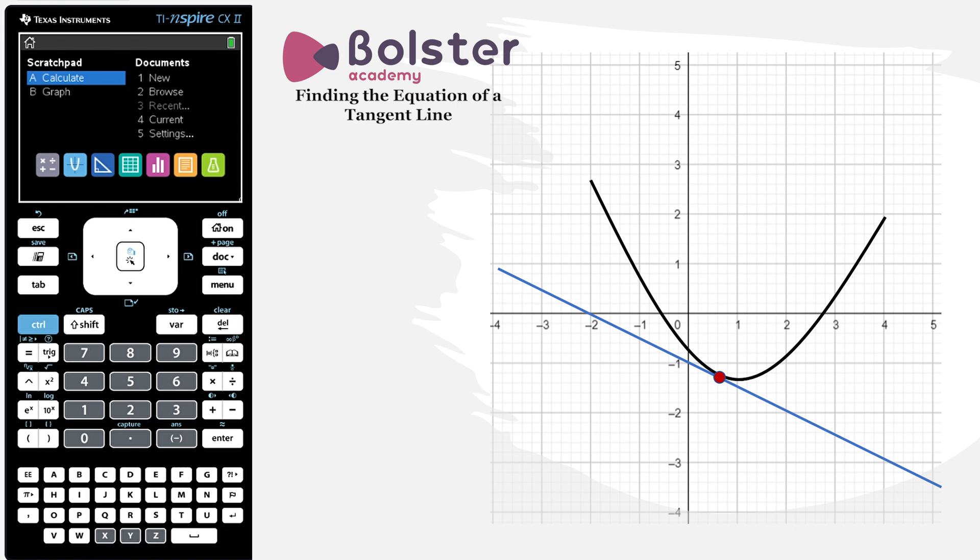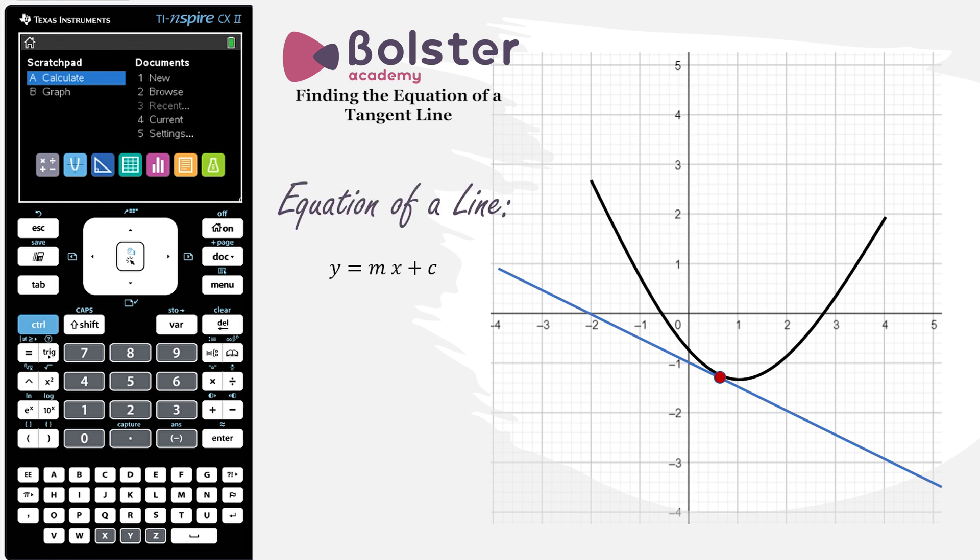So what we're looking for now is the actual equation of the tangent line. Being a linear equation, we know that it has to take the form y equals mx plus c, so let's look at how we calculate this on our calculator.